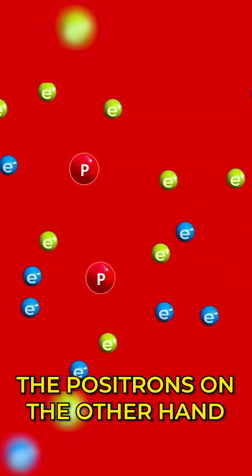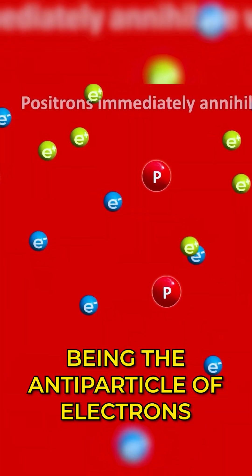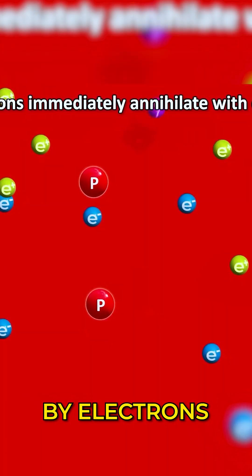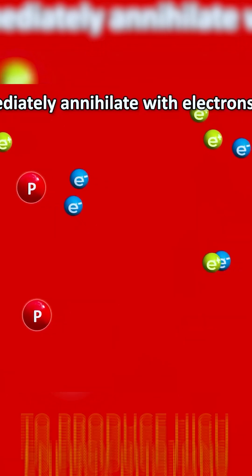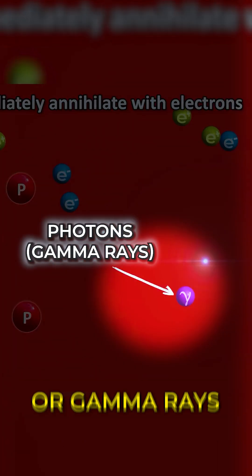The positrons on the other hand, being the antiparticle of electrons, are immediately annihilated by electrons in the plasma of the sun to produce high energy photons or gamma rays.